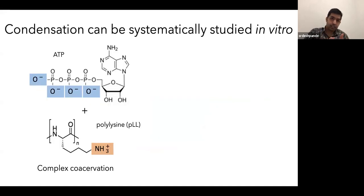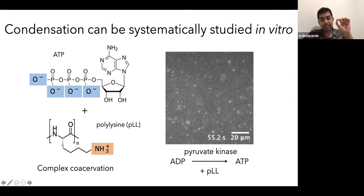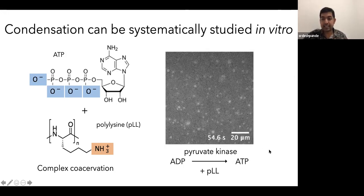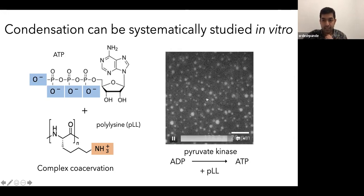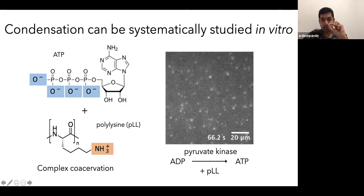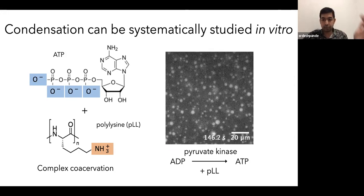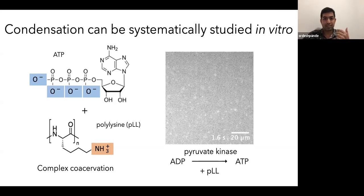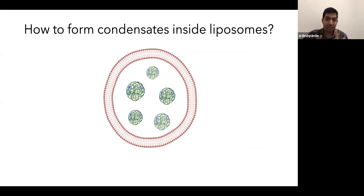And this condensation can also be systematically studied in vitro using model systems. For example, if you take oppositely charged multivalent molecules like ATP and polylysine, they can undergo a process called complex coacervation and form condensates. I show you a video here where I basically mixed ADP with polylysine, and it does not form anything. But as you add pyruvate kinase, which converts ADP to ATP, and then it has enough negative charges, it forms this nice little condensates on a glass cover slip where these bright droplets have high concentration of these polyelectrolytes, while the dilute phase has very low concentration of it. But we are not interested in doing things on a coverslip. What we really want to do is, can we form condensates inside our liposomes in a controlled manner?